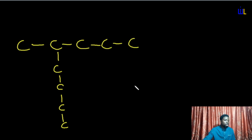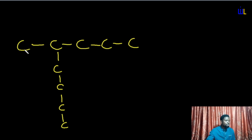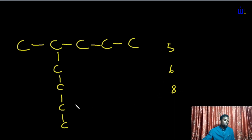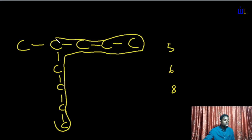Let's look at the screen. A terminal carbon is the last carbon in the chain — the end carbon. We count from end to end and find which gives the longest chain. Counting one path gives five carbons; another gives six; and another gives eight. Among these, the chain with eight carbon atoms is the longest continuous chain, so that becomes the parent chain.